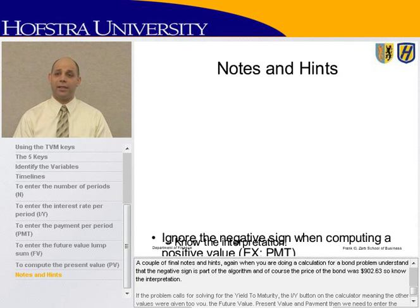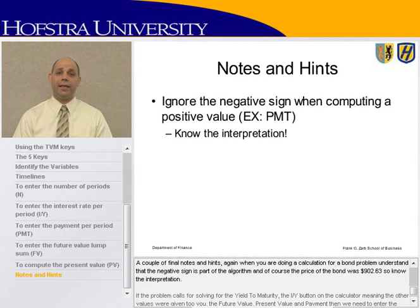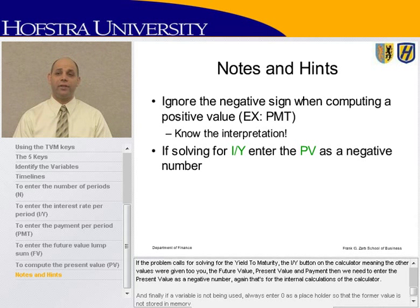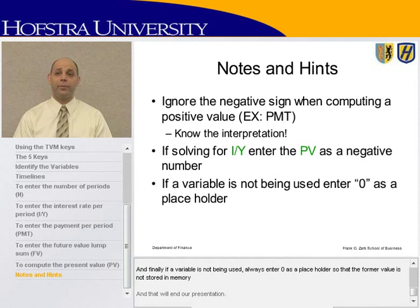A couple of final notes and hints. When doing a bond problem, understand that the negative sign is part of the algorithm, and the price of the bond is $902.63 — know the interpretation. If the problem calls for solving for the yield to maturity using the I/Y button, meaning the other values — future value, present value, and payment — were given to you, then we need to enter the present value as a negative number. That's for the internal calculations of the calculator. Finally, if a variable is not being used, always enter 0 as a placeholder so that the former value is not stored in memory.